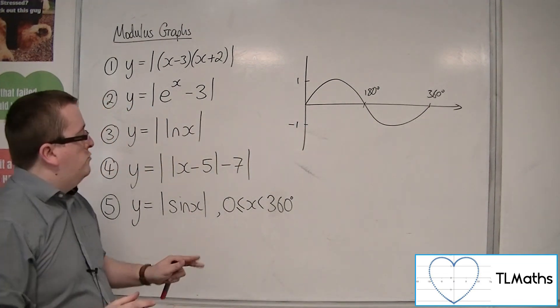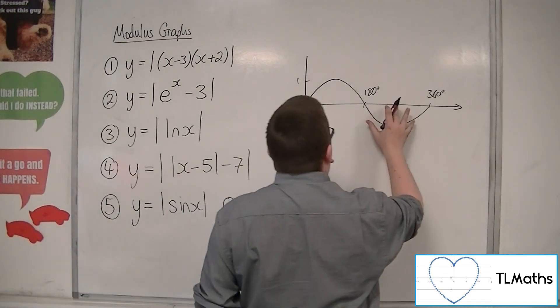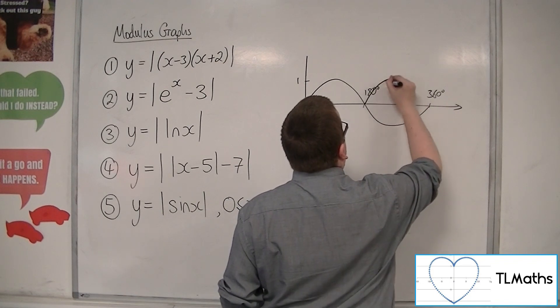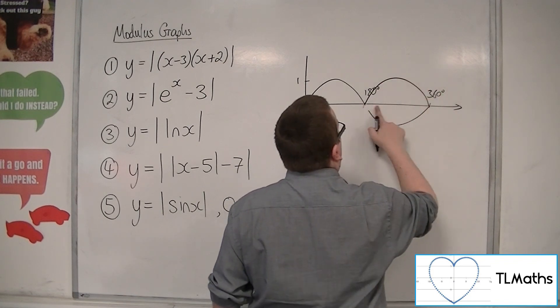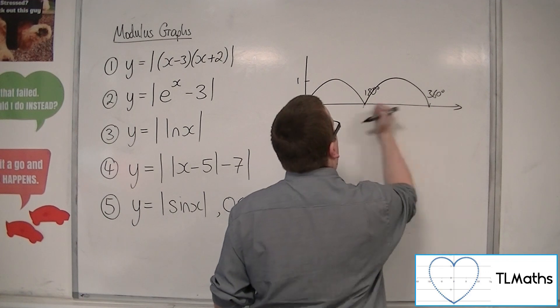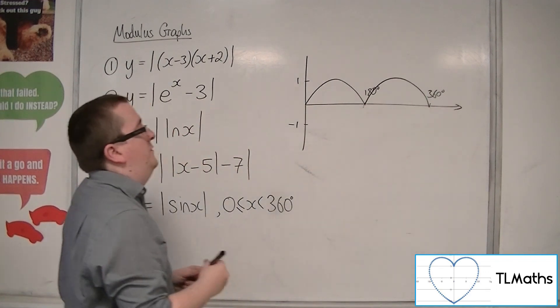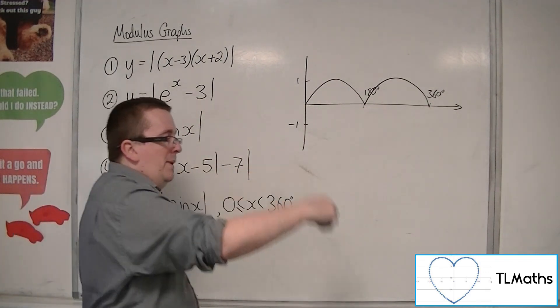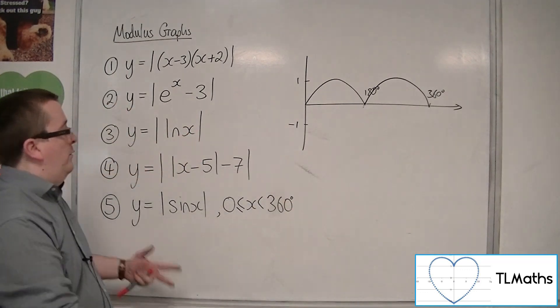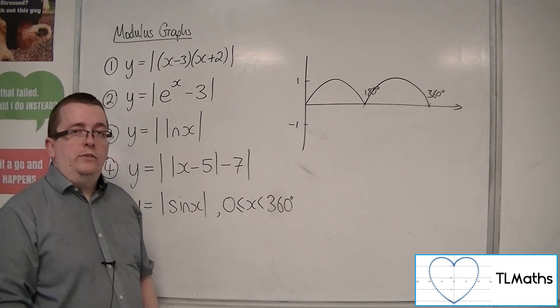So the part of the graph, this part, that's below the x-axis, would get reflected up. And so the curve would actually look like that. And if you just continued it, it would just be bouncing along. And that would be y equals mod sine x.